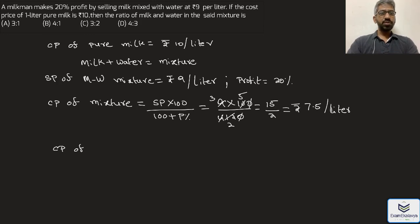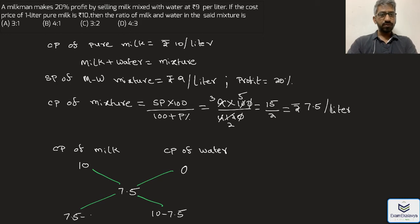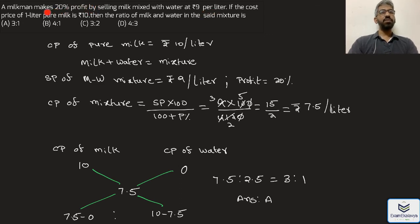Cost price of milk is 10 rupees per liter, cost price of water is 0, and cost price of mixture is 7.5 rupees per liter. Applying the rule of allegation: 10 minus 7.5 is 2.5, and 7.5 minus 0 is 7.5. The ratio is 7.5 is to 2.5, which simplifies to 3 is to 1 — given in option A. So if the milkman adds one part water for every three parts of milk and sells at 9 rupees per liter, he gains a profit of 20 percent.